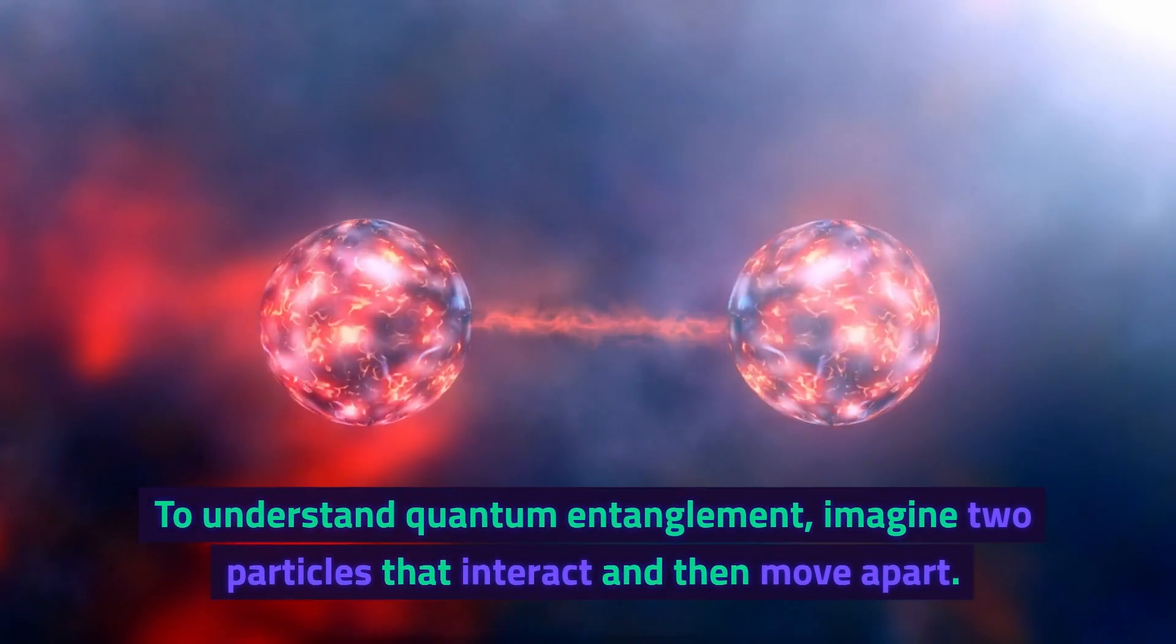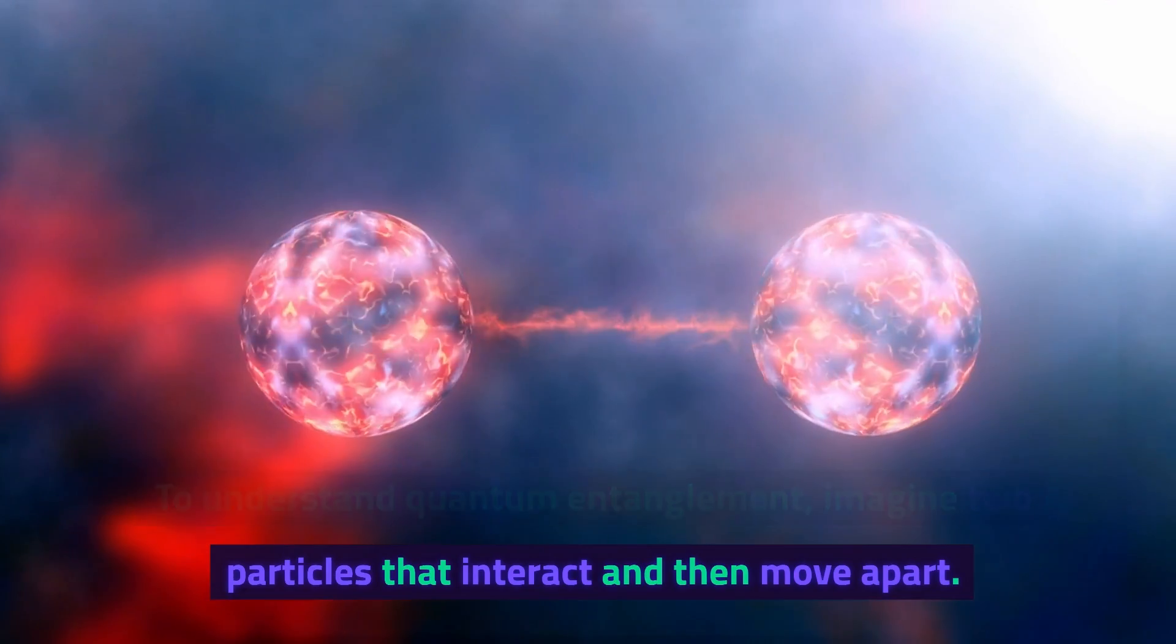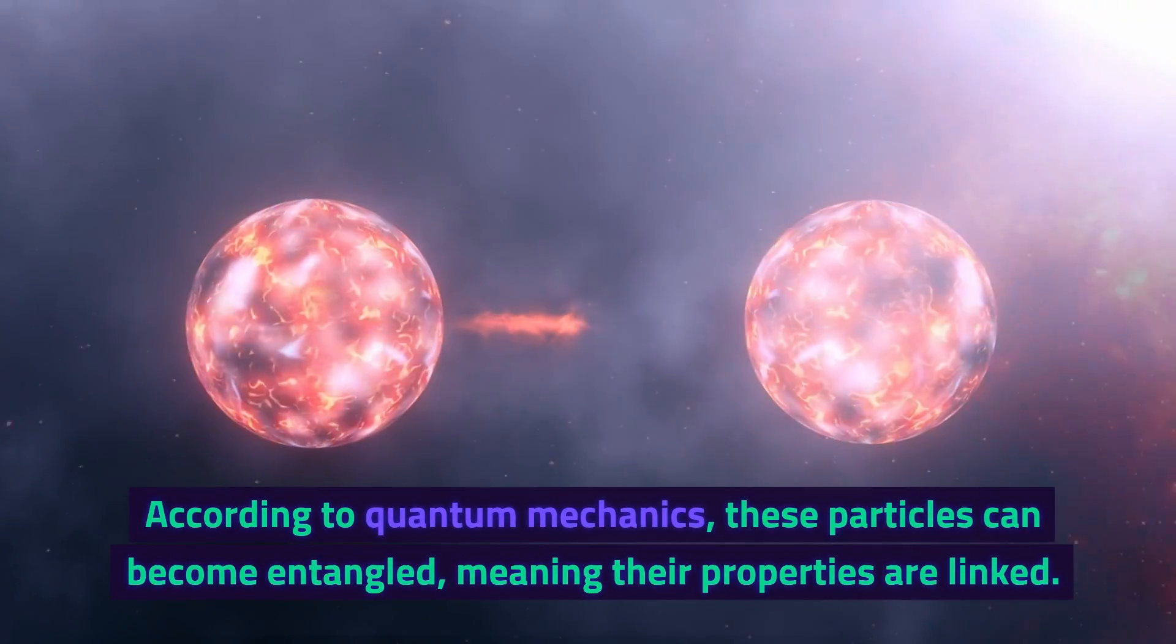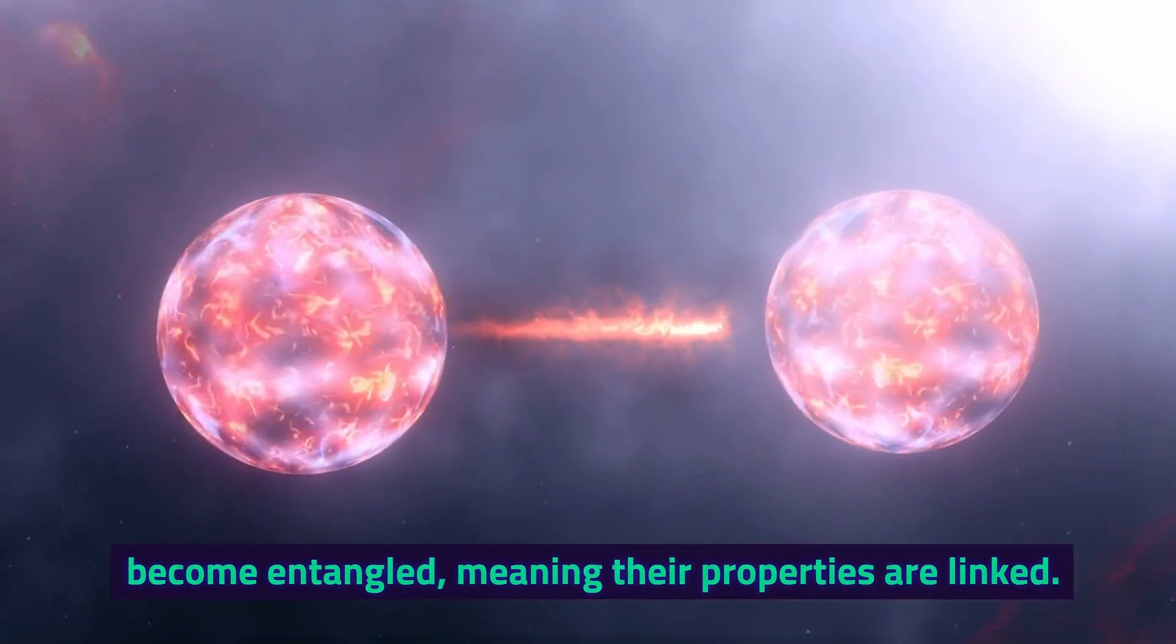To understand quantum entanglement, imagine two particles that interact and then move apart. According to quantum mechanics, these particles can become entangled, meaning their properties are linked.